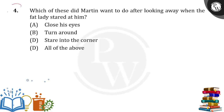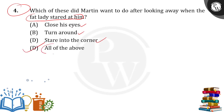Your fourth question is: which of these did Martin want to do after looking away when the lady stared at him? When the fat lady stared at him, what was the reaction of the child? Close his eyes, he turned around and stared into the corner, or all of the above.